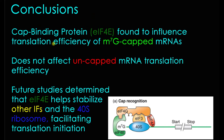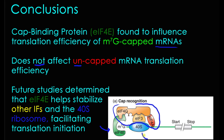In conclusion, this study identified that the cap binding protein — later determined to be EIF4E — is actually able to influence the translation efficiency of M7G capped mRNAs, but does not affect the translation efficiency of uncapped mRNAs. Future studies determined that EIF4E actually helps to stabilize other initiation factors and the 40S ribosomal subunit, in addition to binding the 5' cap, which facilitates the initiation of translation. Thank you very much.